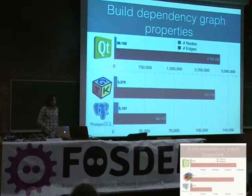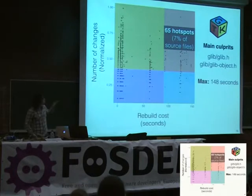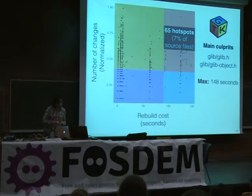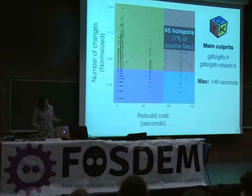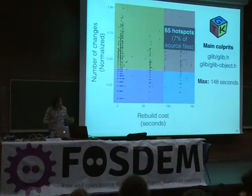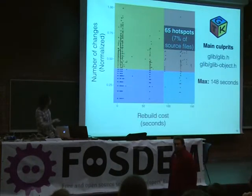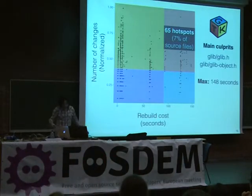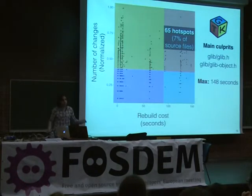Here are some examples from GTK first. We found about 65 files — roughly 7% of all source files — identified as hotspots with those two thresholds. Beyond that, we found you wouldn't have to fix all 65 files. There were main culprits that actually dragged other files in. I'd point out a couple: the main glib header file and glib object file. The maximum build time here was 148 seconds, just a little over two minutes.